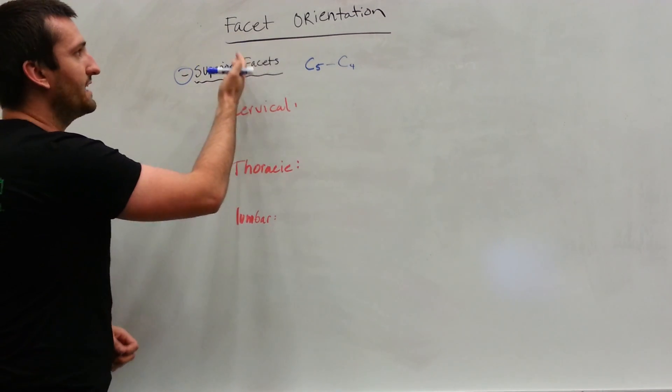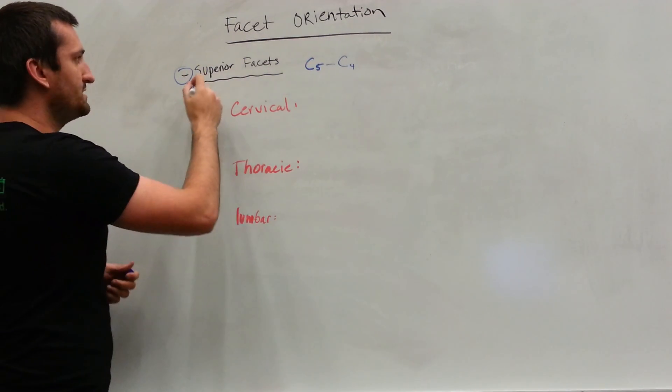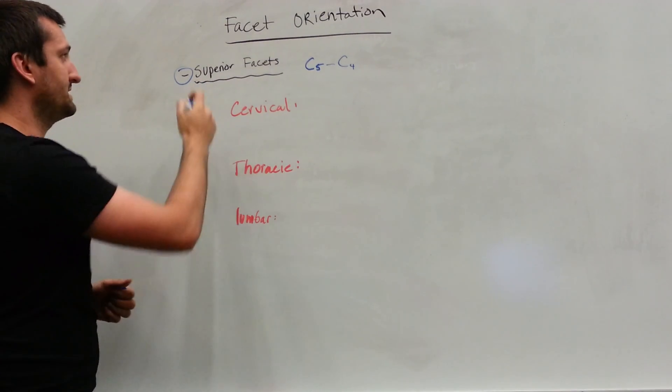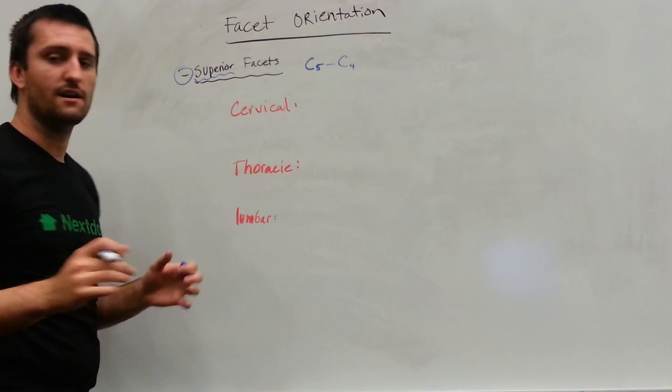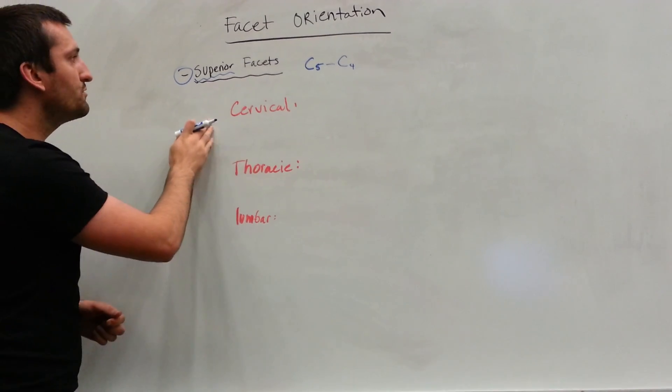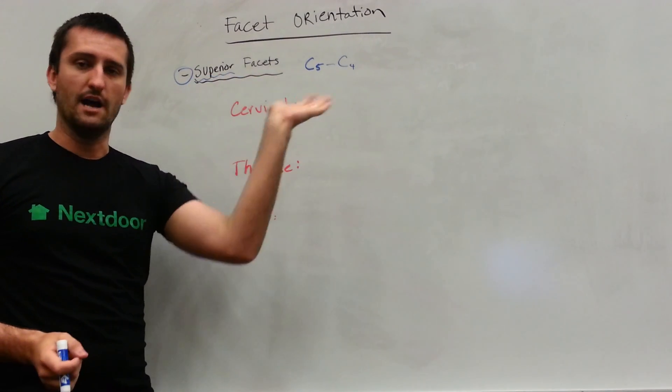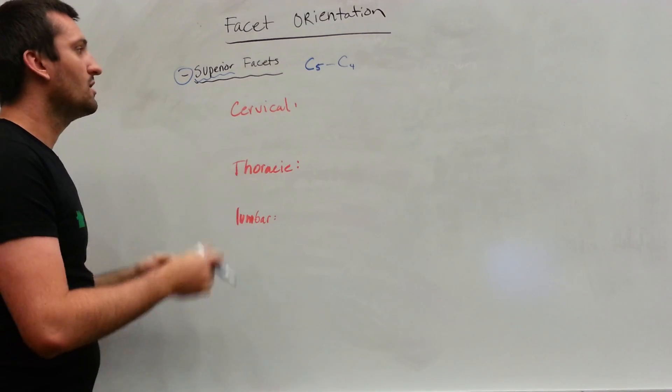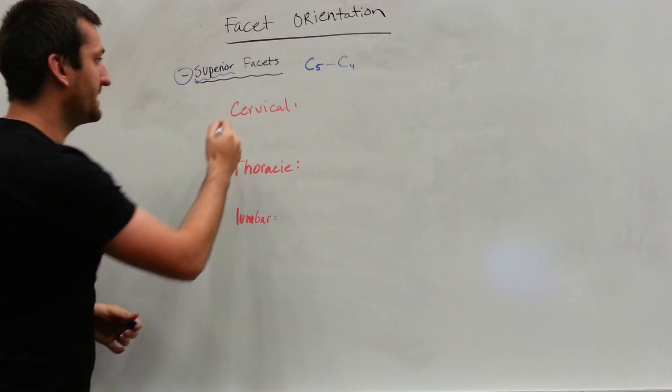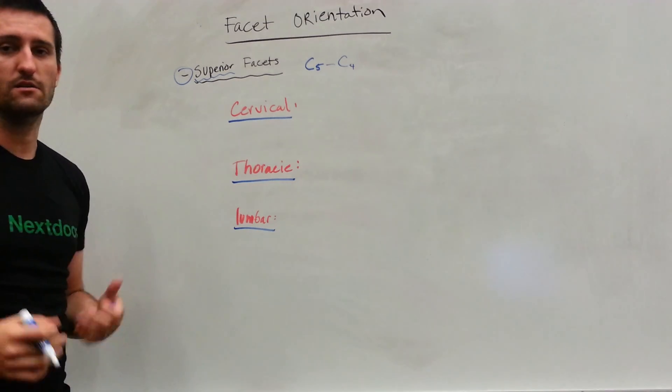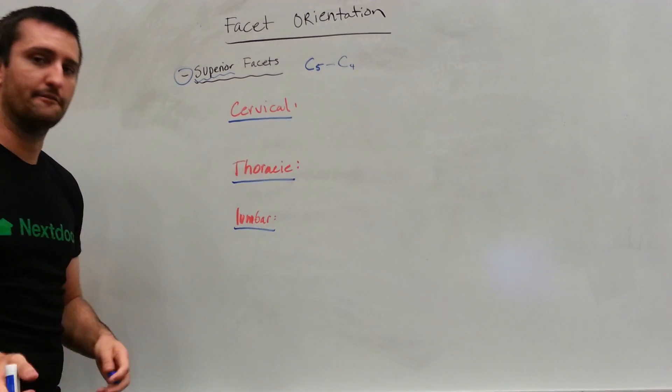So now, the facet orientation. How are these superior facets? We're only going to be talking about the superior facets now. That's a big concept to remember. How do these facets orient themselves? Are they oriented straight up? No. They're going to be oriented in a certain fashion. And depending on what level it is, whether it's cervical, thoracic, or lumbar, the orientation will be different.